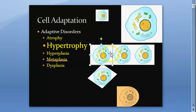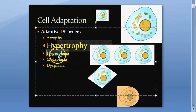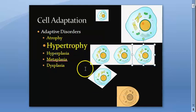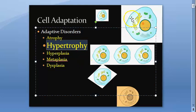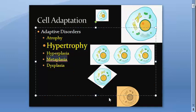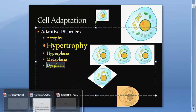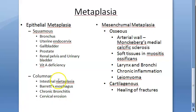Atrophy is where the cell becomes small in size. Hypertrophy is where the cell becomes large in size. Hyperplasia is where there are an increased number of cells. Metaplasia is where the type of cell has changed - a squamous will become columnar or columnar will become squamous. Dysplasia is where the cell is completely destroyed and you cannot even recognize the cell type.